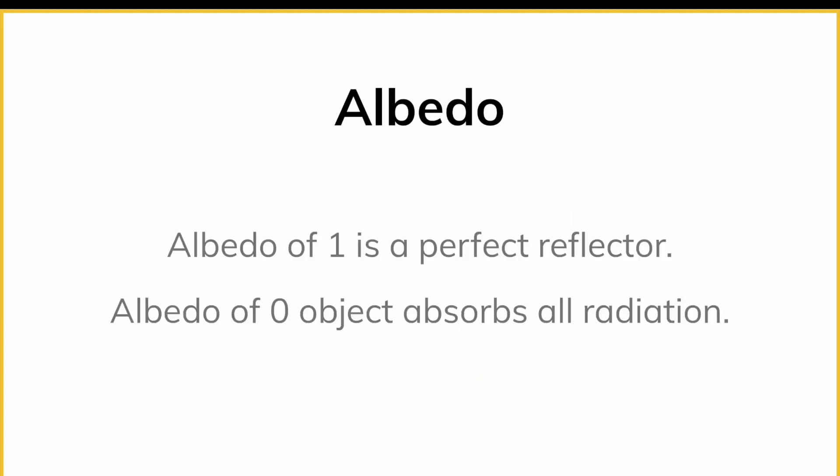An object that has an albedo of one is a perfect reflector — it absorbs nothing. An object with an albedo of zero absorbs all radiation. We sometimes refer to that as a black body, which is the theoretical object that absorbs and emits all wavelengths of radiation.